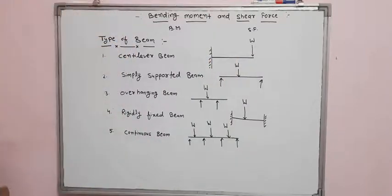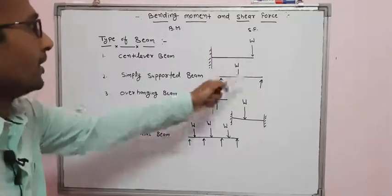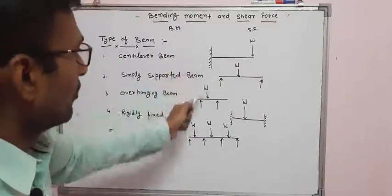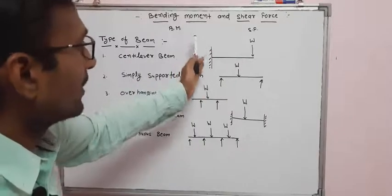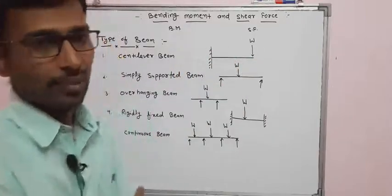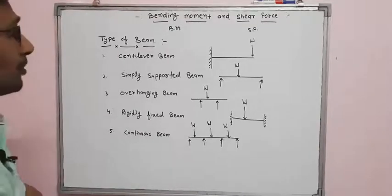The load on a cantilever beam can be from the downward or upward direction. From the figure, one side is fixed and the other side is free. Next is the simply supported beam. In the simply supported beam, both sides are supported.